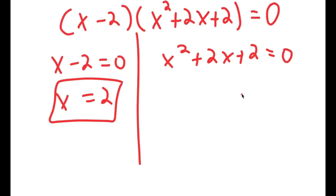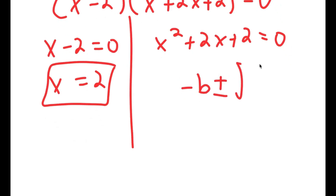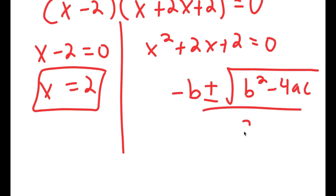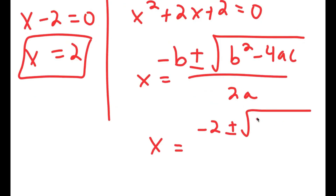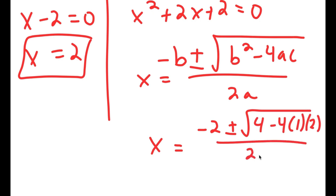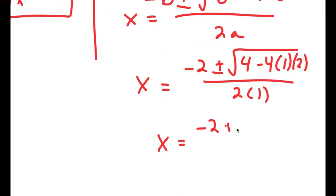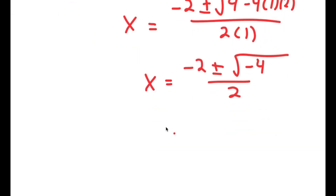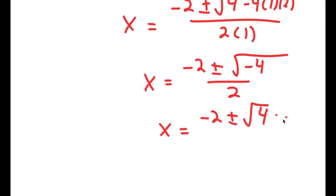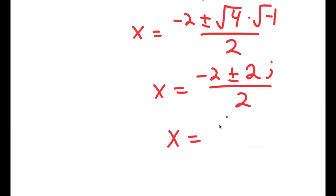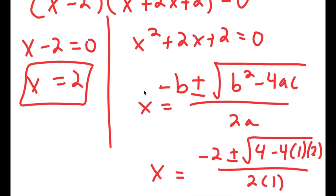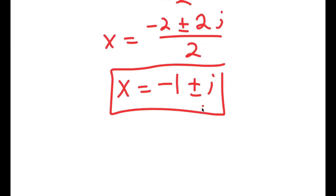For x squared plus 2x plus 2 equals 0, we use the quadratic formula: negative b plus or minus the square root of b squared minus 4ac, all over 2a. So x equals negative 2 plus or minus the square root of 4 minus 4 times 1 times 2, all over 2 times 1. That gives negative 2 plus or minus the square root of negative 4, over 2, which equals negative 2 plus or minus 2i over 2, which simplifies to negative 1 plus or minus i. So the three solutions are x equals 2, x equals negative 1 plus i, and x equals negative 1 minus i.